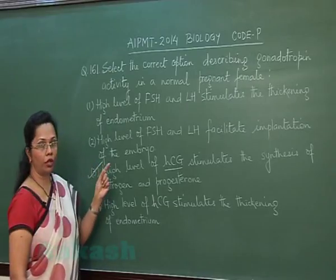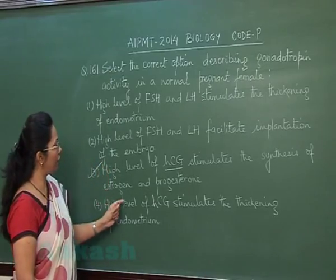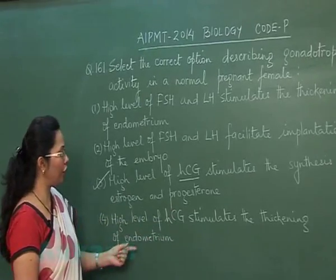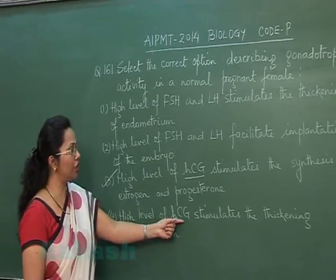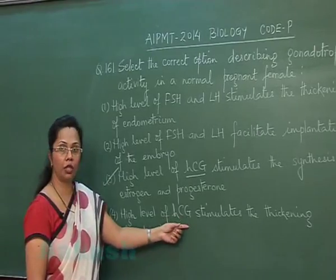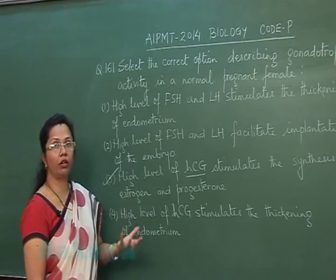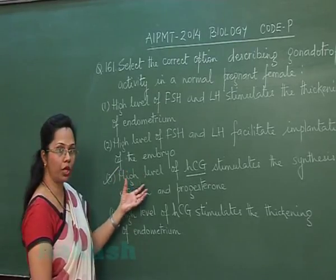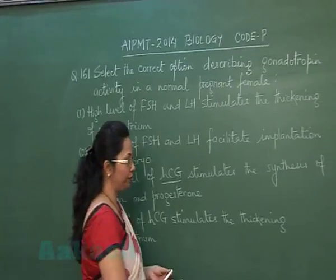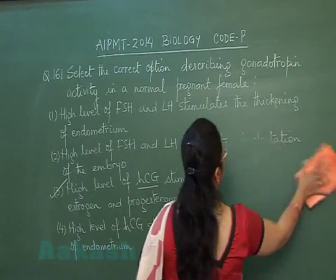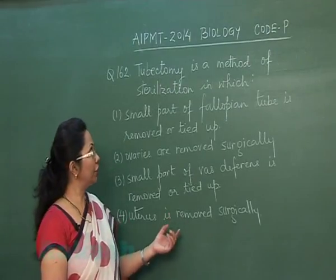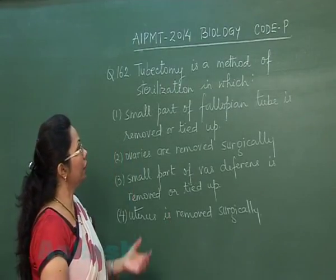The fourth option says high levels of HCG stimulate the thickening of the endometrium — this is incorrect. HCG does not have a direct effect on the endometrium; rather, HCG prevents the regression of the corpus luteum. So the correct answer is option 3.